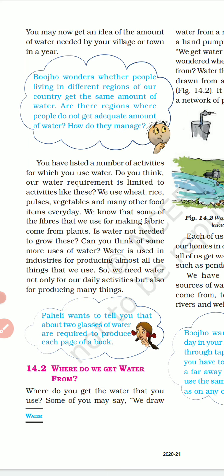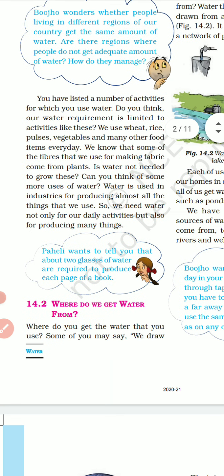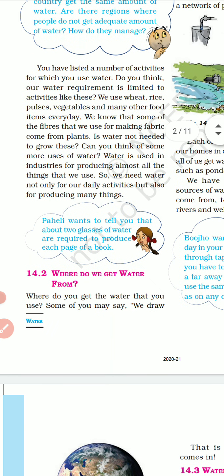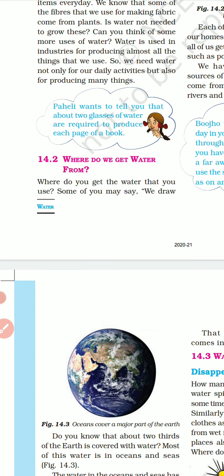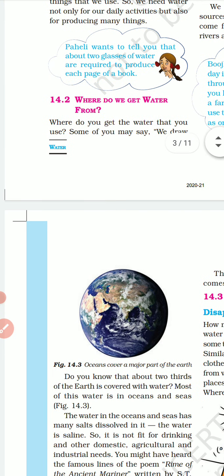In the textile industry, for making thread, making cloth, and coloring it - you need water for everything. In the medicine industry you need water. Mostly in all industries you need water. Paheli wants to tell you that about two glasses of water are required to produce each page of a book - so imagine how much water is needed for a 100-page notebook!